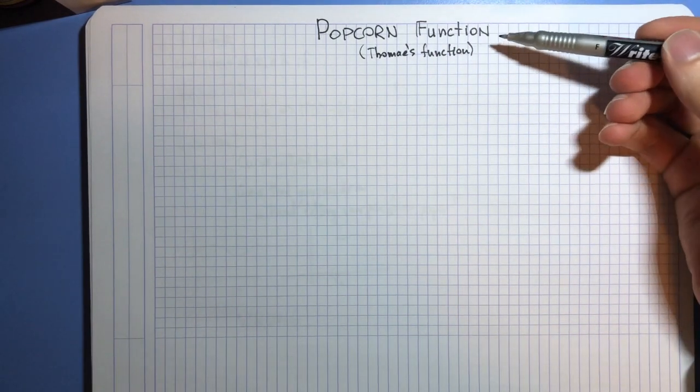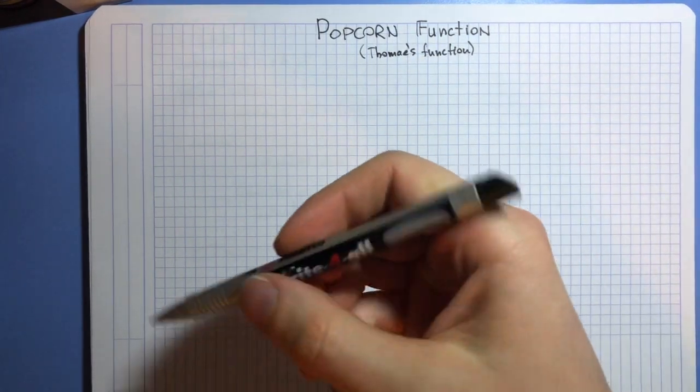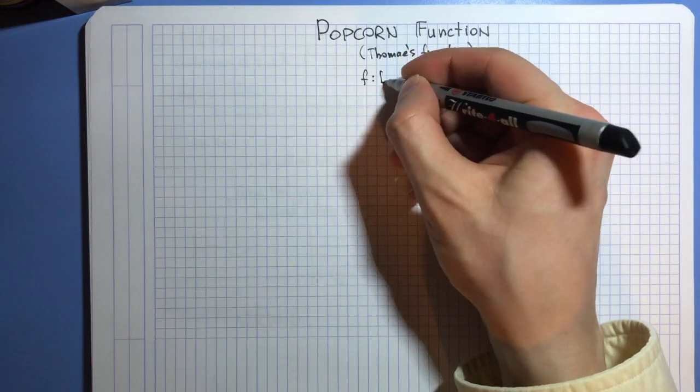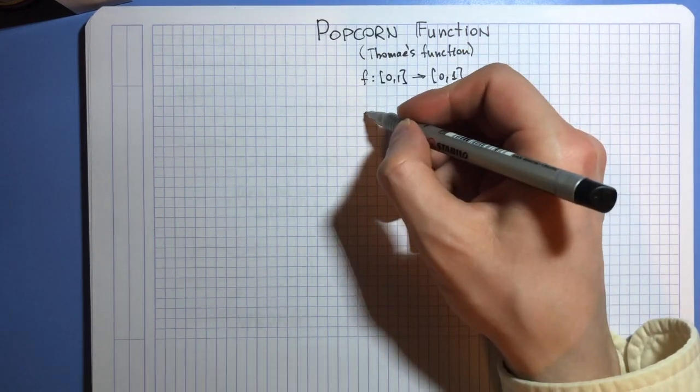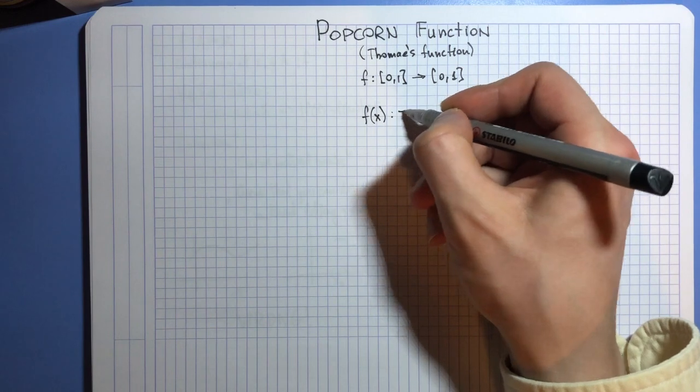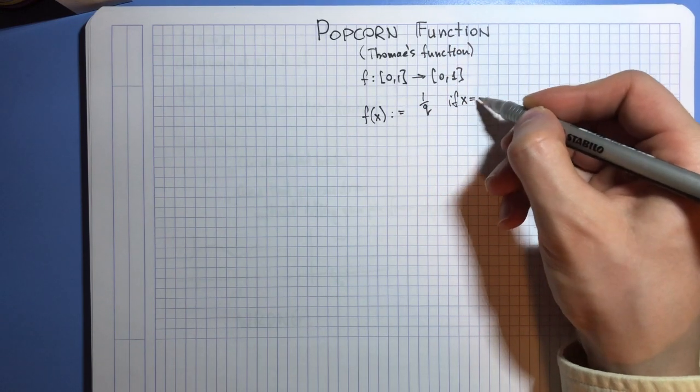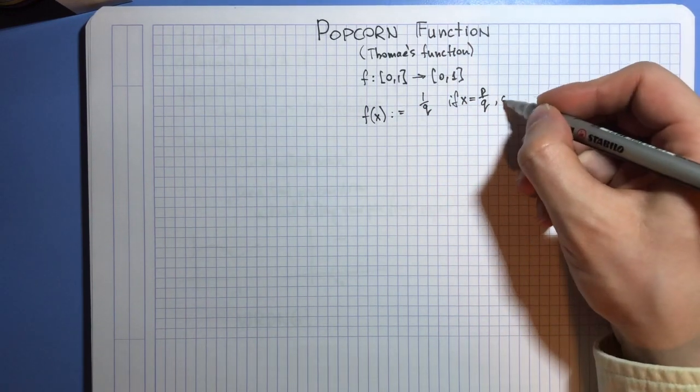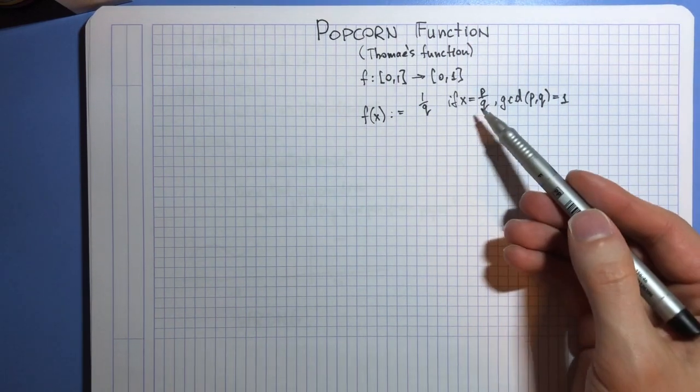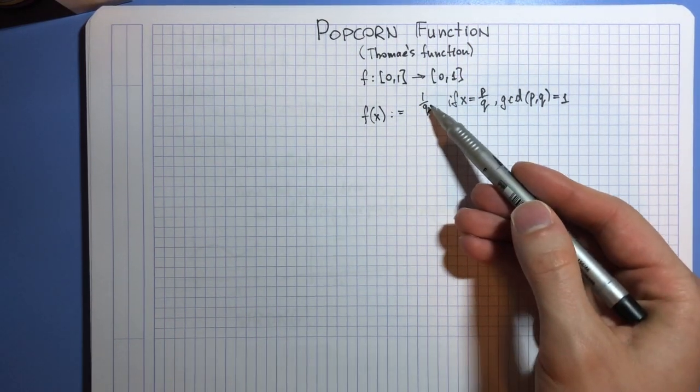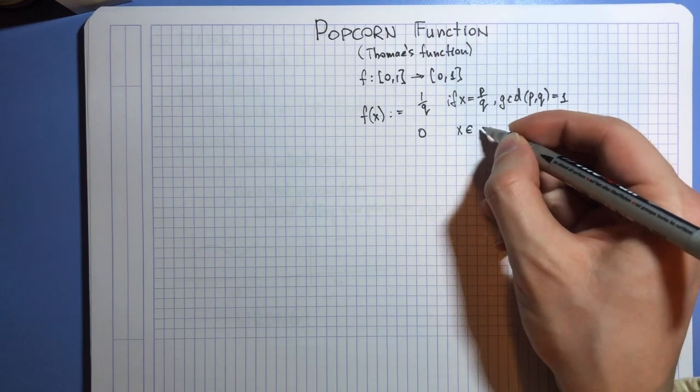This function is called popcorn function, or rather more academically, Thomae's function. Here's how it's defined. It's a function from unit interval to unit interval that's defined like that. It maps rational points, so if x is p over q with co-prime numerator and denominator, rational points get mapped to 1 over their denominator, and it gets mapped to 0 if x is irrational.